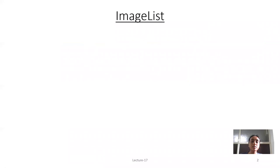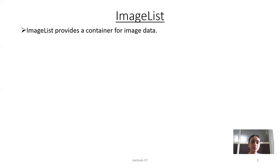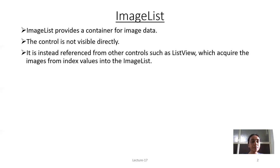Now we will see the first control: Image List. Image List provides a container for image data. The control is not visible directly. It is instead referenced from other controls such as List View, which acquires the images from an index value into the Image List.